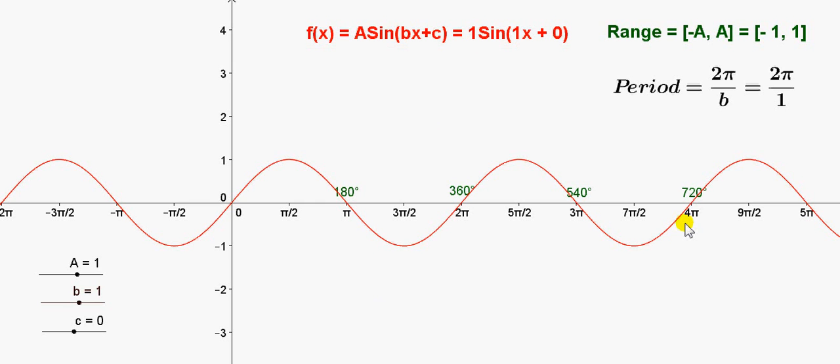So this is the first sine graph that we looked at. We know that its range is from minus 1 to 1, and the period is 2π over 1, or just 2π.